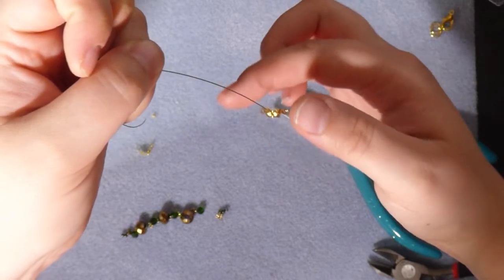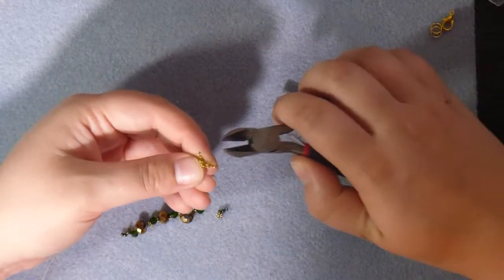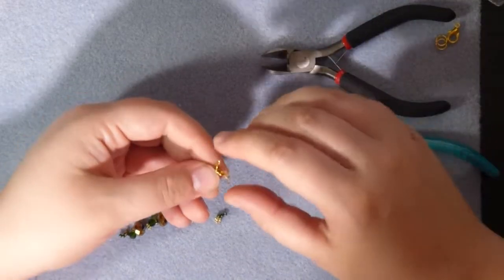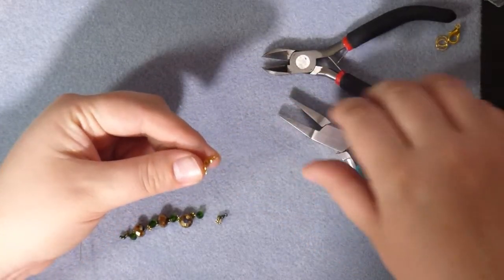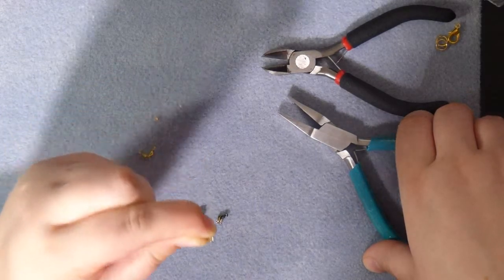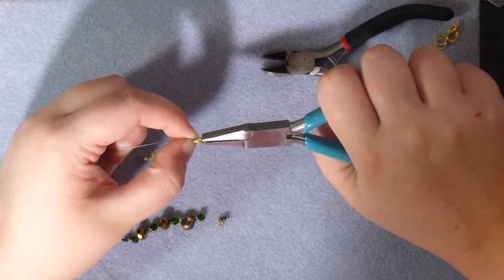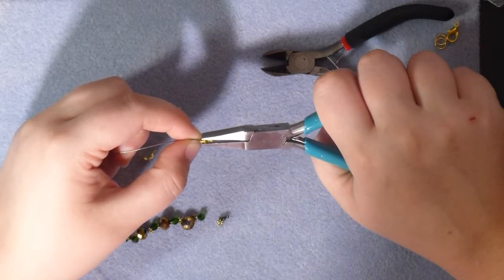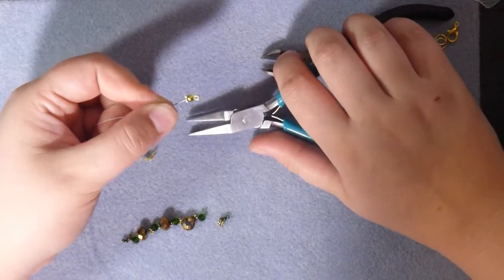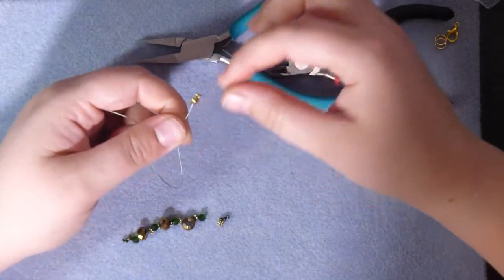So then what we have to do is close our calotte. I'm just going to trim off a little bit of the excess wire first, and then all you do is gently ease the calotte closed. You can use your fingers or you can use your pliers - whichever is easiest for you. That's part one done, and it stops that crimp bead being scratchy against your skin, so your jewelry is nice and comfortable to wear as well as looking professional.